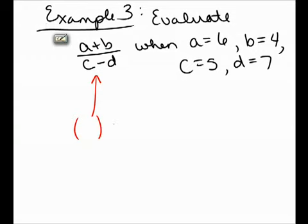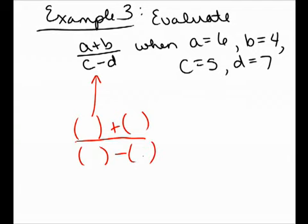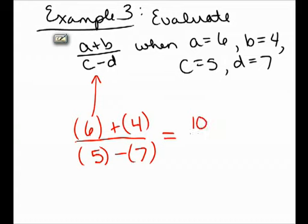First, I remove a, b, c, and d and replace them with empty parentheses. I put the value of each variable inside the parentheses. Now I will evaluate the numerator to get 10, and I'll evaluate the denominator to get negative 2. In the final step, I will divide the entire numerator by the entire denominator to get an answer of negative 5.